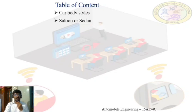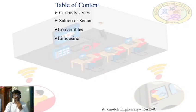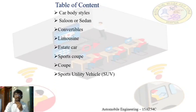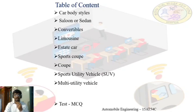There is the saloon or sedan kind of car. Then we are going to discuss about the convertible car, limousine type, estate type, step construction, sports coupe, coupe car, SUV — what we call as sports utility vehicle — and multi-utility vehicle. These are the contents we are going to discuss. Based on this discussion, at last we have an MCQ. So let's start.